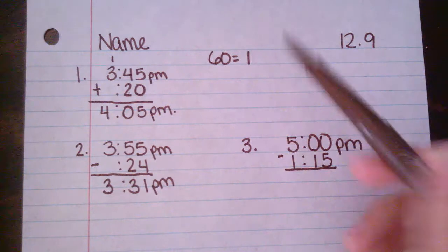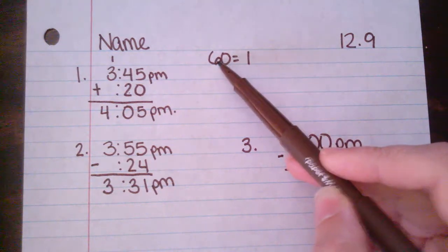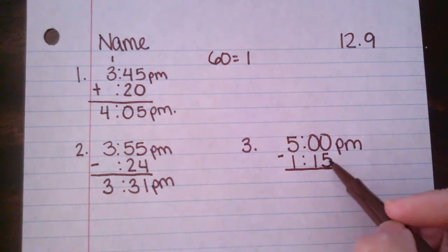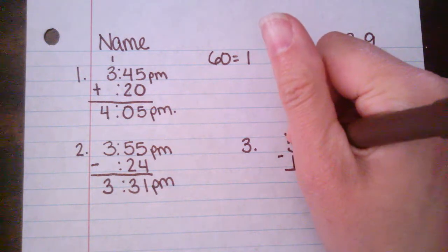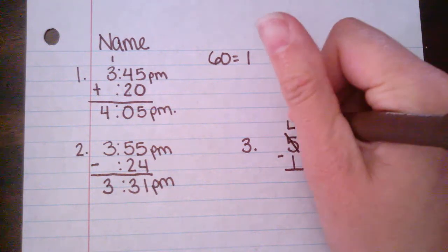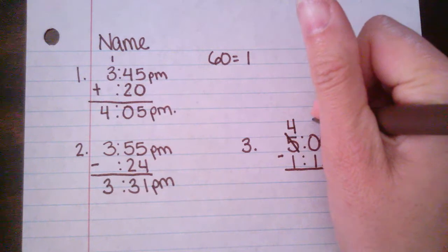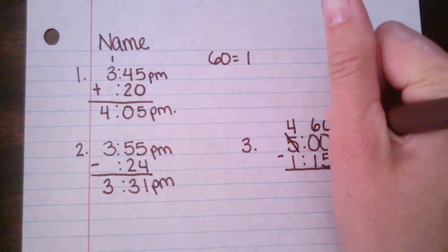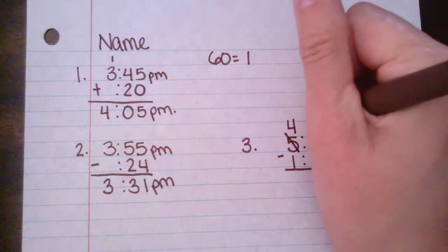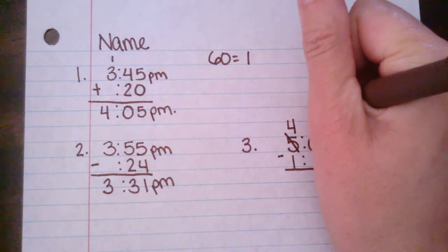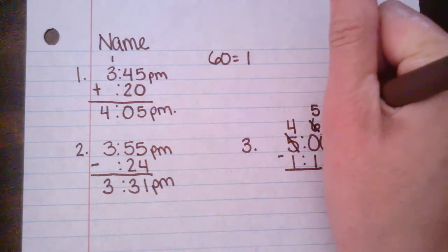And just like in number one, we have to remember that a whole is 60 minutes because over here we have to borrow. So I'm going to borrow from my 5 and it's going to become a 4. Now this will become 60 minutes. And now I have to borrow from my 6. It becomes a 5 and this becomes a 10.